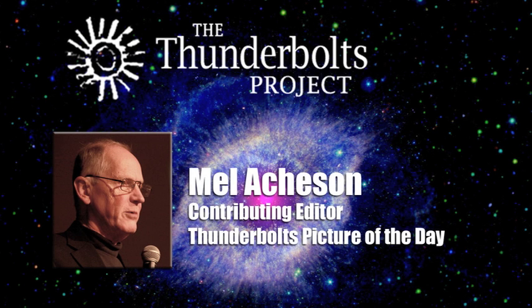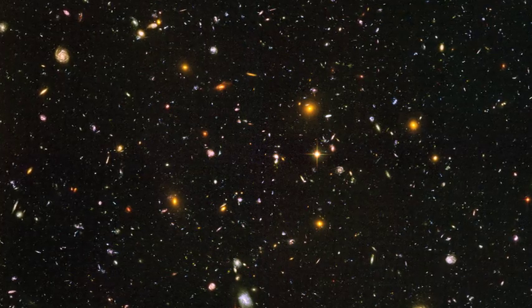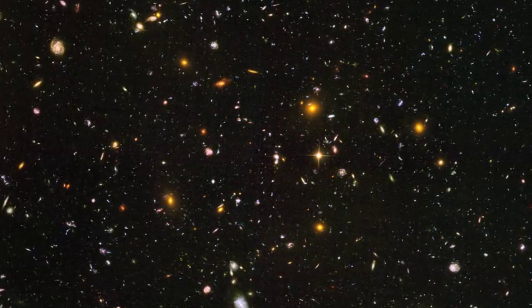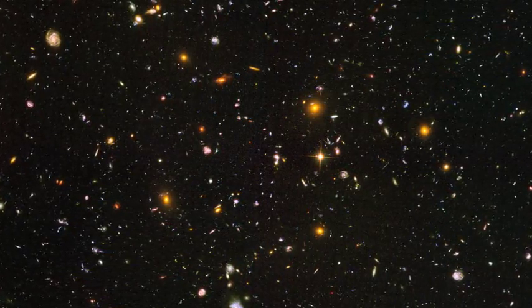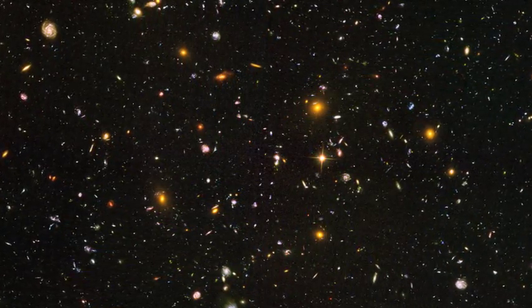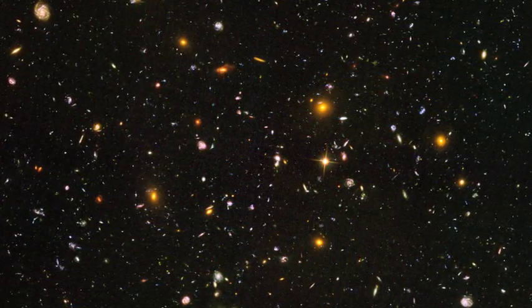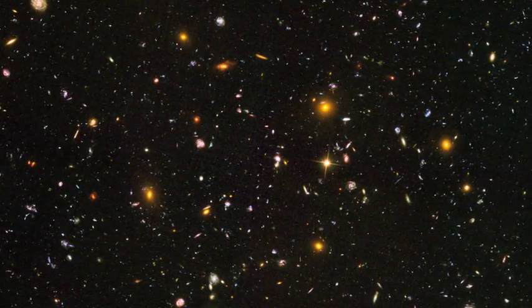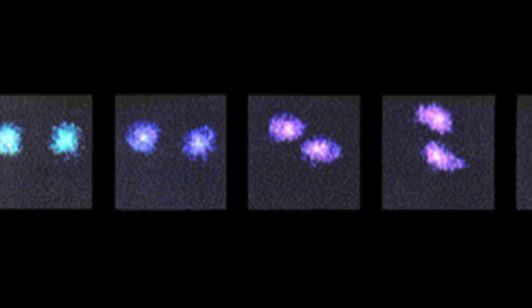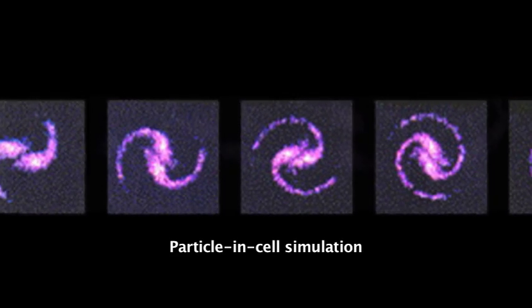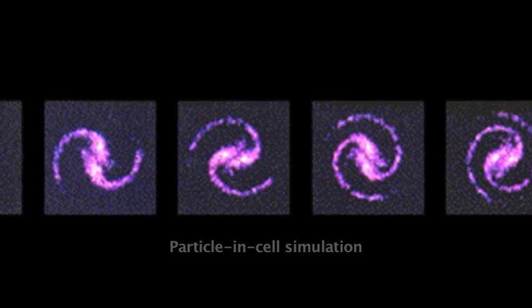In the conventional theory, one of the problems they have is gravity forming galaxies so soon after the Big Bang. That's because gravity is a very weak force. In the Electric Universe, you are organizing material by electricity and magnetism, which are vastly more powerful than gravity, and are able to form these kinds of structures in very short times.